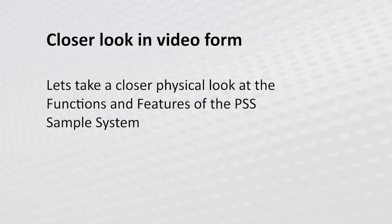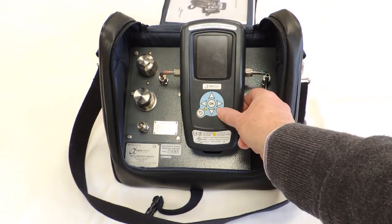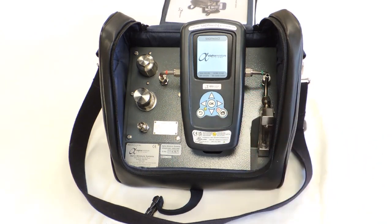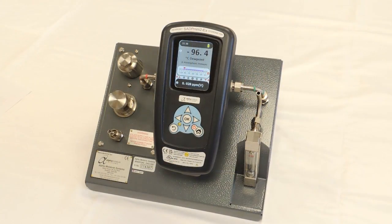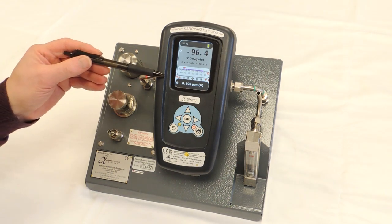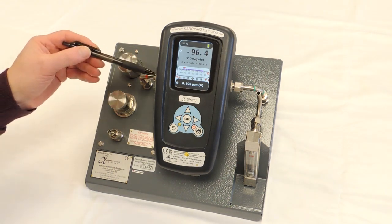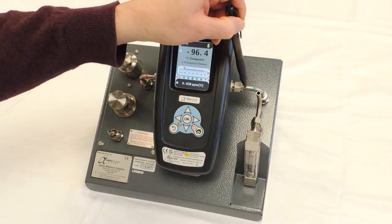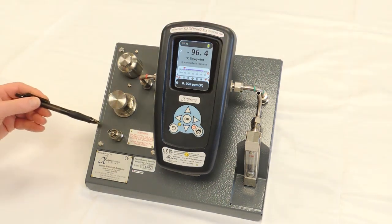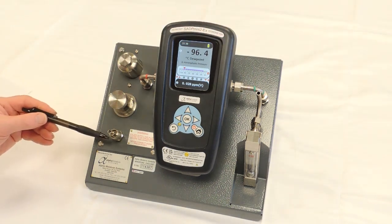Let's have a closer physical look at the functions and features of the PSS sample system. For the purpose of this demonstration, we've taken the PSS out of its carry case. Installed in the PSS is an SADP Mini 2 EX which is connected using these inlet and outlet compression fittings. The PSS is supplied on a chassis. The inlet on this example is a quick connect.